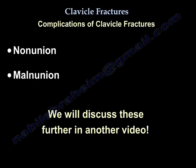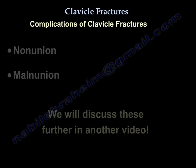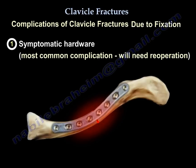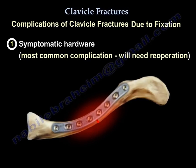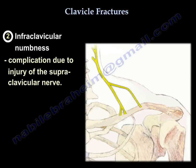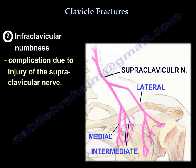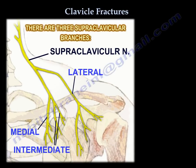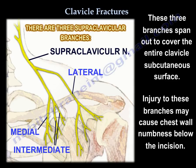The main complications of clavicle fracture and its treatment are nonunion and malunion, which will be addressed in other videos. From fixation, the most common complication requiring reoperation is symptomatic hardware. The second most common complication is infraclavicular numbness — likely the most common overall — due to injury of the supraclavicular nerve. There are three branches — medial, lateral, and intermediate — that fan out to cover the entire subcutaneous surface of the clavicle.